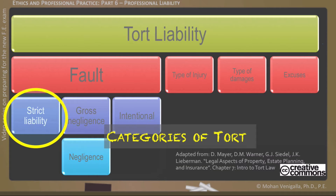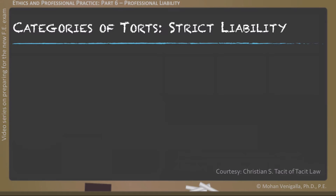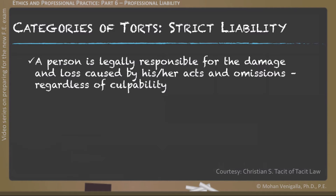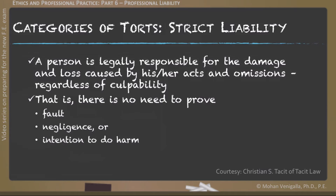In strict liability tort, a person is legally responsible for the damages and loss caused by his or her acts and omissions, regardless of culpability. In other words, in order to prove strict liability tort, there is no need to prove fault, negligence, or intent to do harm.